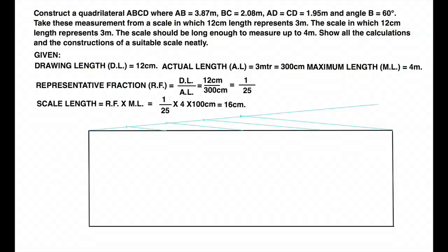Now we will convert this into how many parts? 4 parts. Because maximum length is 4 meter. So you take 4 divisions like this. How you divide line into equal parts? That way you divide into 4 parts.